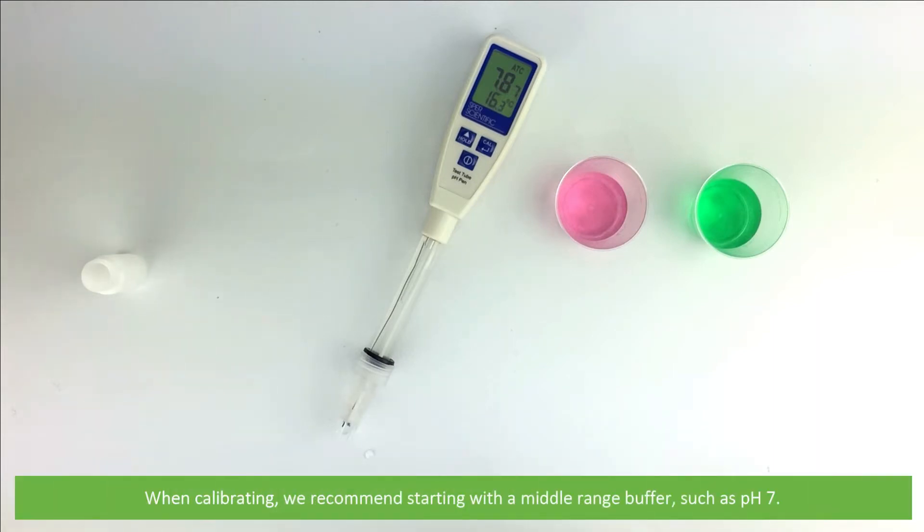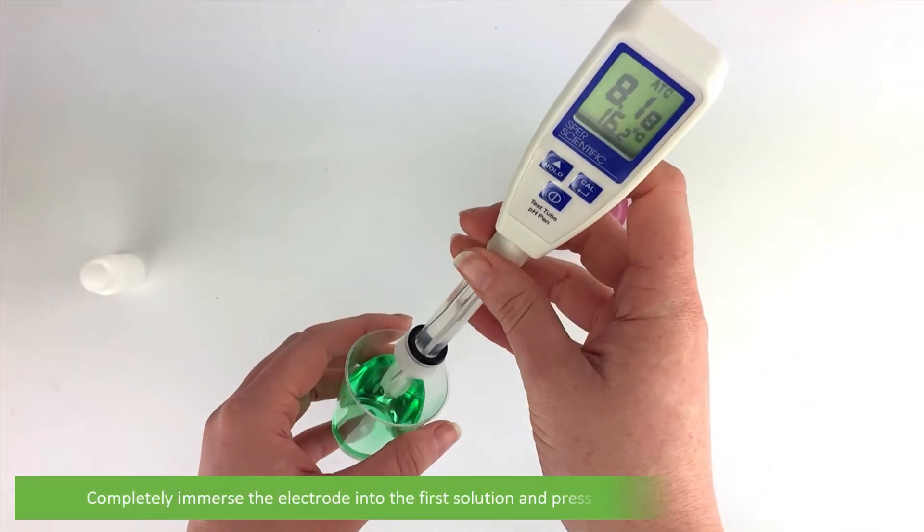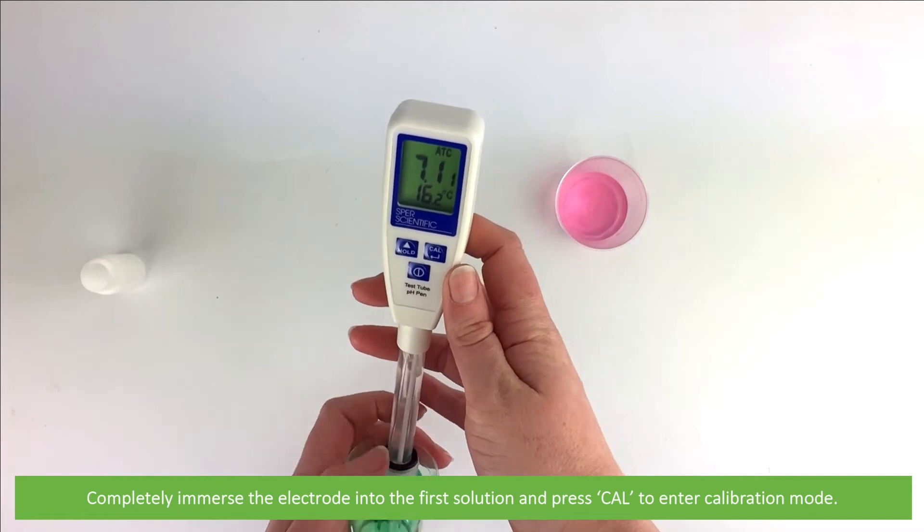When calibrating, we recommend starting with a middle-range buffer such as pH 7. Completely immerse the electrode into the first solution and press CAL to enter calibration mode.